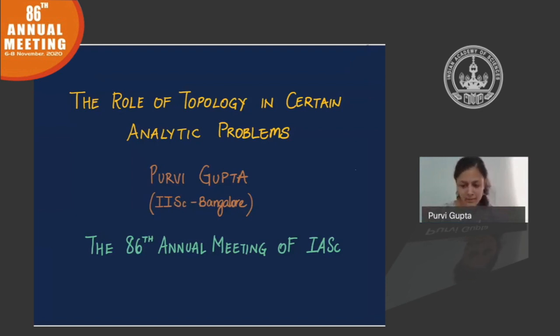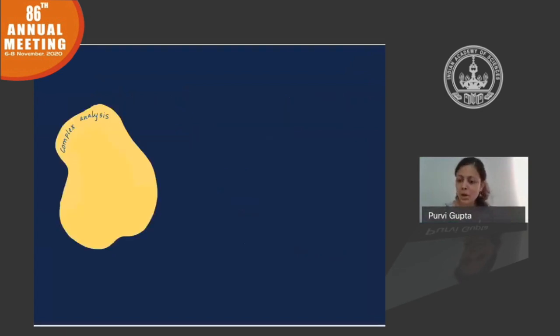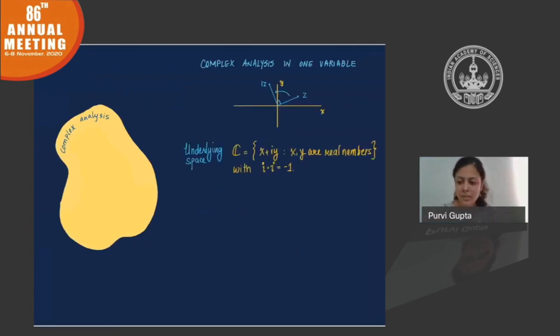But before I get into the specifics, I wanted to give a brief overview of the field of mathematics that I work in. Very broadly, I'm a complex analyst, which is probably a field that is familiar to many people even outside of mathematics. The underlying space is the set of complex numbers, and we have a very important complex number which is the square root of minus 1.